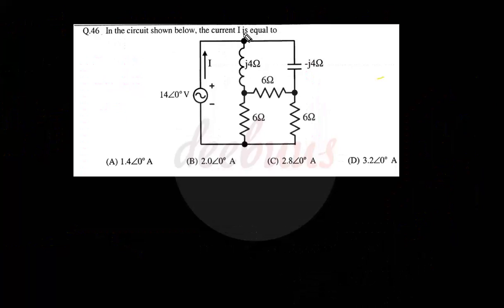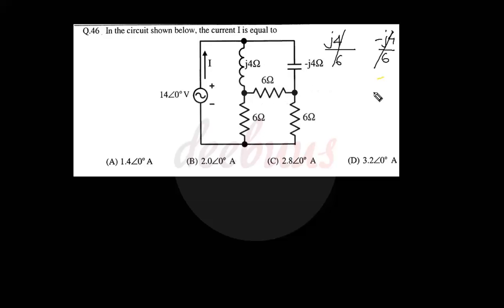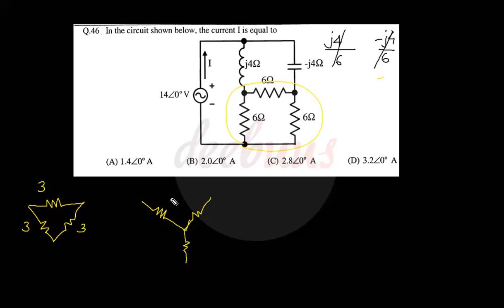Moving to another two-mark question: in the circuit shown below, the current I equals — first we check whether this is a balanced Wheatstone bridge. On the left side, j4/6, and on the right side −j4/6 — these are not equal, so it is not a balanced Wheatstone bridge. Since it is unbalanced, we apply delta-to-star conversion.